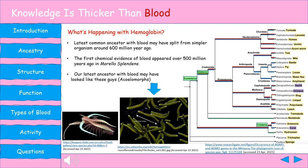I show you this tree not only to give you all some exposure to it, but it also helps in explaining the origins of blood. The split between simple organisms — cnidaria, who do not have blood — and every other living thing on earth, bilateria, may have happened around 600 million years ago. Where you see Eumetazoa on the tree, it's highlighted in green. This is where the first common ancestor of all living things with blood is believed to have split from simpler organisms. There is a gap of around 100 million years between that split and where the first evidence of blood appeared in the fossil record in Morellus splendens.